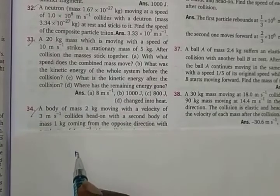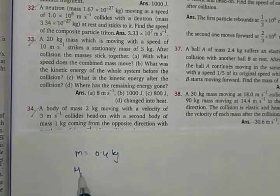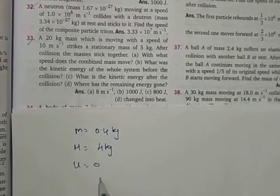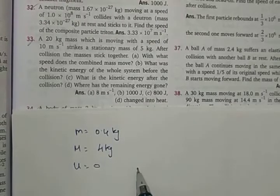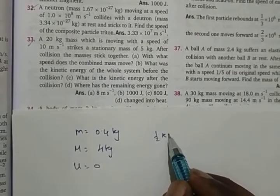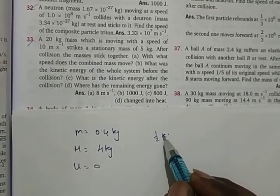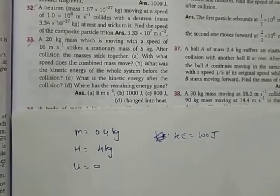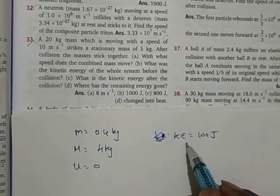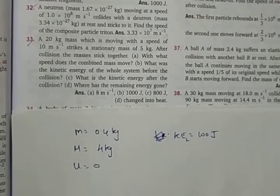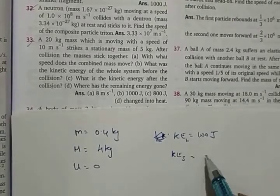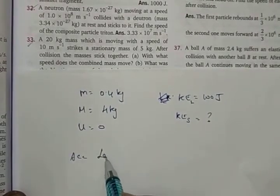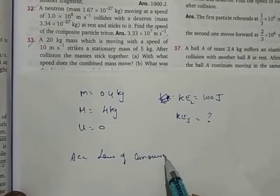The small mass is 0.4 kg and the bigger mass is 4 kg. The initial velocity is 0 because it was already at rest. The kinetic energy of the larger fragment is 100 joules, and we need to find the kinetic energy of the smaller fragment. According to the law of conservation of momentum: